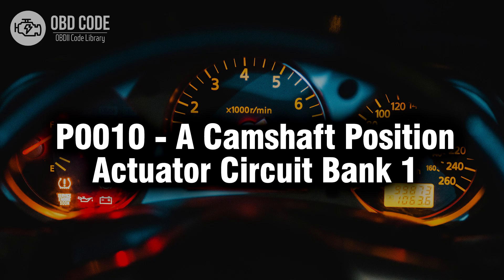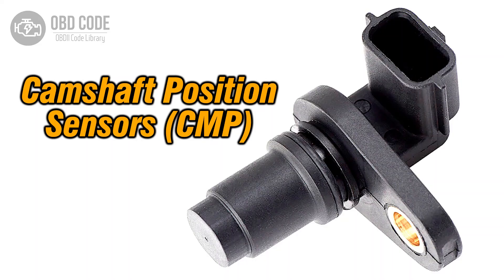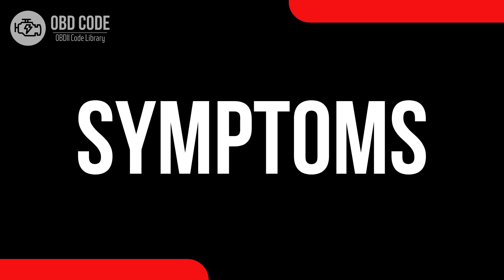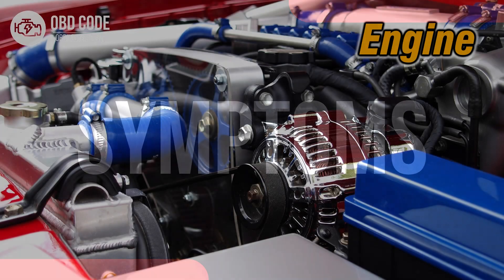Welcome. In this video we will talk about code P0010, its symptoms, causes and possible solutions. The P0010 trouble code is related to the camshaft position actuator circuit in bank 1. It indicates a potential issue with the camshaft position actuator in the first bank. This code is typically found in vehicles with variable valve timing systems.